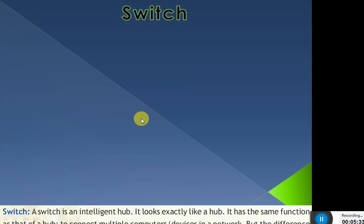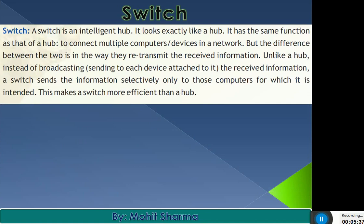Now, a switch is an intelligent hub. It looks exactly like a hub and has the same function of connecting multiple computers or devices in the network, but the difference is in the way they retransmit information. In the case of a switch, information is transmitted only to the intended node, not to all nodes as with a hub. That's why a switch is called an intelligent hub — it sends information selectively only to the computer for which it is intended, making it more efficient.